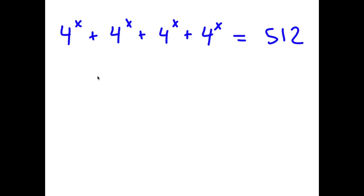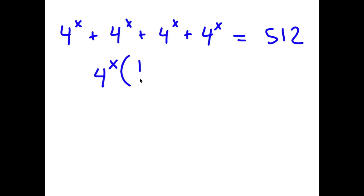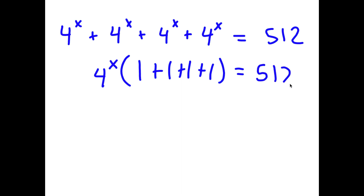In this problem, I have 4 to the power of x plus 4 to the power of x plus 4 to the power of x plus 4 to the power of x is equal to 512. I'm going to first start by factoring out 4 to the power of x. So now I have 4 to the power of x times 1 plus 1 plus 1 plus 1 is equal to 512.